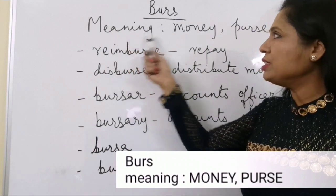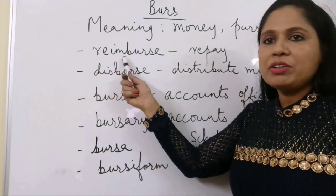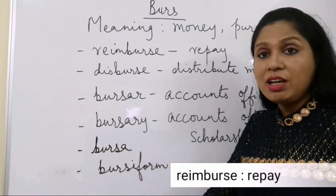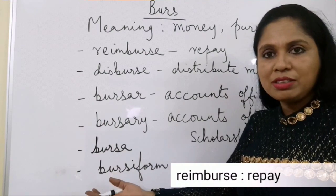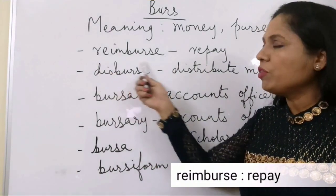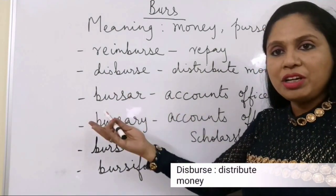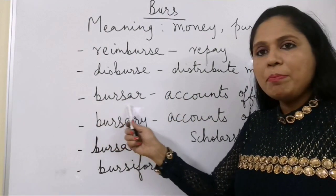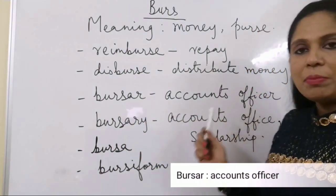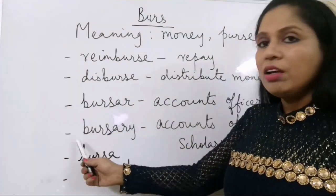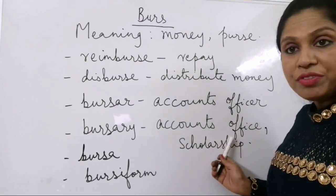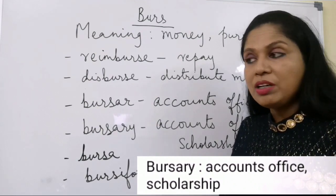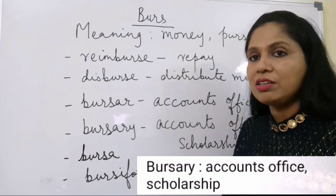The root word burse means money or purse. Reimburse — re means to do again, so reimburse means to repay. If I incurred official expenses, I get the money back — that is reimbursement. Disburse means to give away or distribute money. A bursar is an accounts officer, and a bursary is an accounts office. Bursary also has a secondary meaning: scholarship — money given to students pursuing their studies.